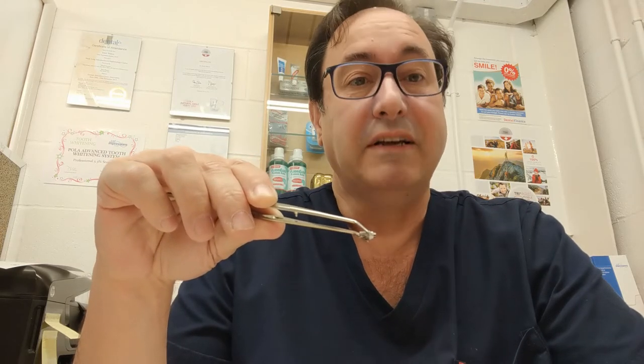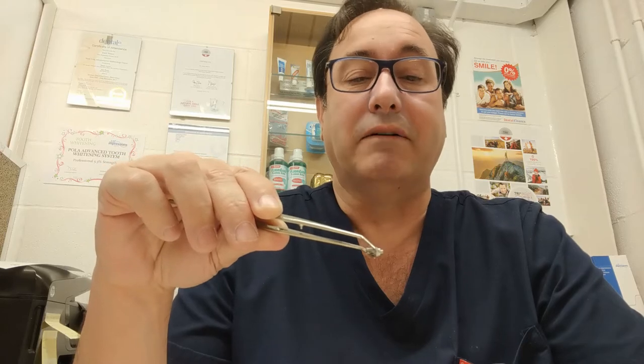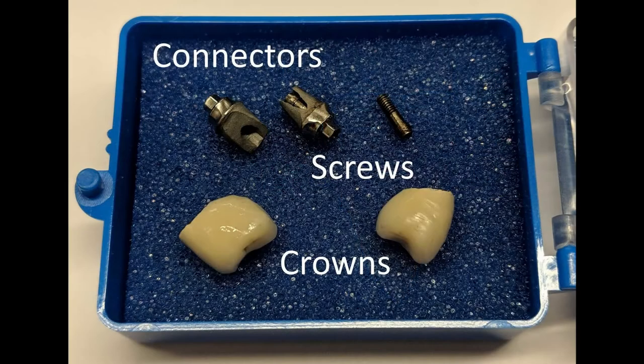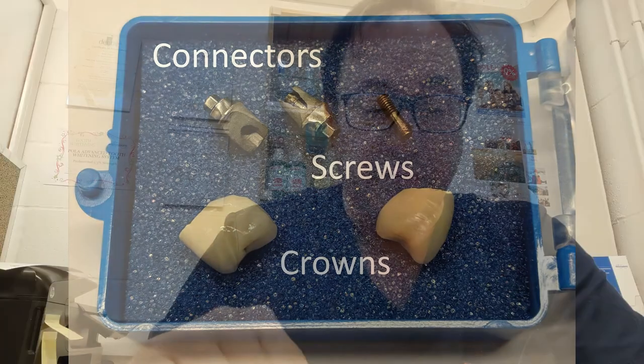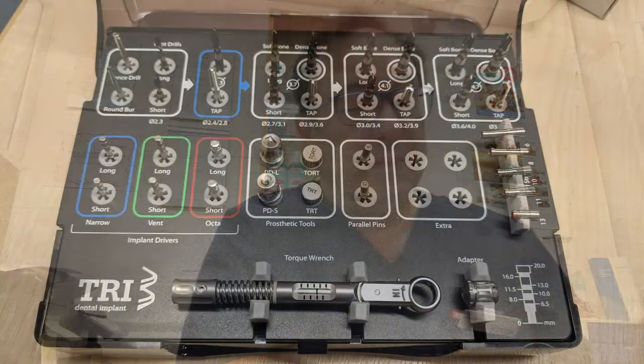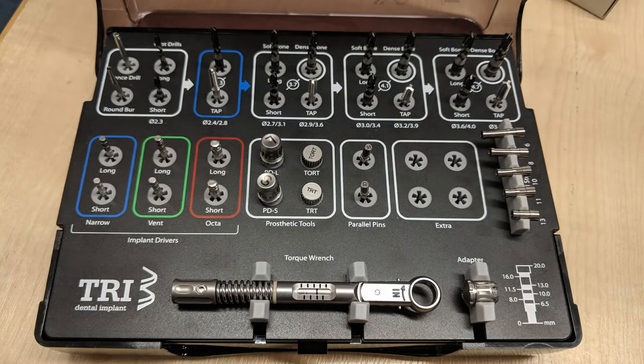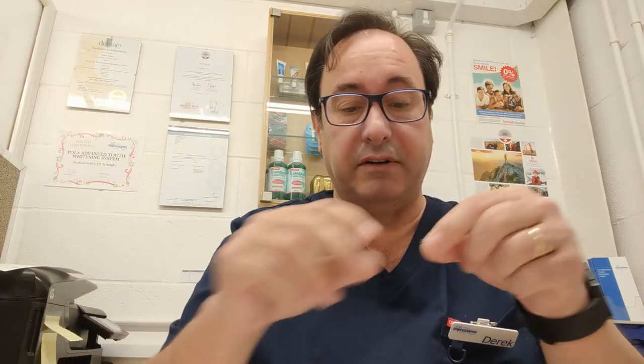So basically, an implant-supported crown consists of three parts: the implant, the connector, and the crown. The connector is screwed into the implant — this small connector has a screw that goes right through the middle of it. We screw it in using a screwdriver from our implant kit. The very small screwdriver fits up inside the connector and literally screws it into the implant, and then the crown is placed over the top.